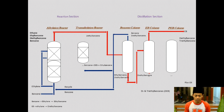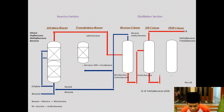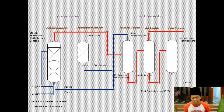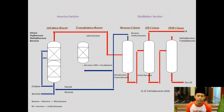At the ethyl benzene column, ethyl benzene is the overhead product, and the bottom consists of diethyl benzene and triethyl benzene, which is fed into the polyethyl benzene column. At the polyethyl benzene column, the overhead product consists of diethyl benzene and triethyl benzene, which is fed into the transalkylation reactor to be recycled and react with fresh ethylene and benzene. The bottom product of the polyethyl benzene column is flux oil, which is used as fuel.